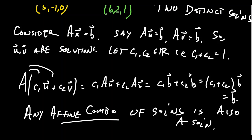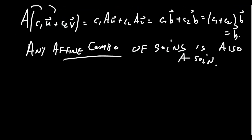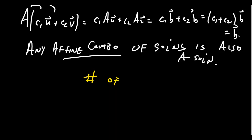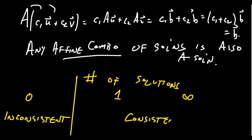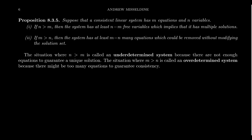Any affine combination of solutions is also a solution. So if you ever find two distinct solutions to a system of linear equations, any affine combination also gives a solution. Since there are infinitely many choices for c1 and c2 satisfying c1 plus c2 equals 1, you get infinitely many solutions. In general, there are three options for the number of solutions to a linear system: no solution — in which case we say the system is inconsistent — a unique solution, or infinitely many solutions. If a system has a solution we call it consistent.